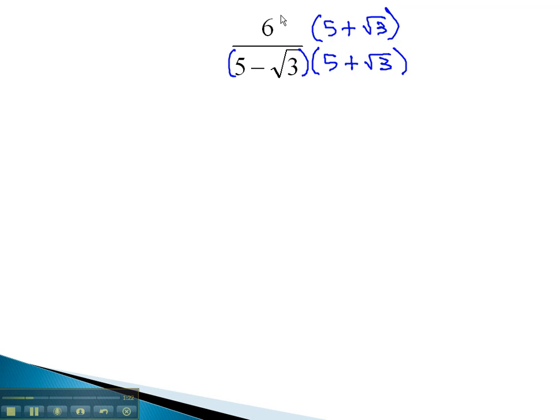In the numerator, we simply have to distribute. 6 times 5 is 30, plus 6√3. In the denominator, because they're conjugates, we can multiply the first term. 5 times 5 is 25, and the last term. √3 times √3 is √9, which is just 3. Remember, we're subtracting because we have a positive times a negative. 25 minus 3 is 22.